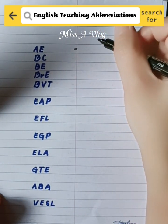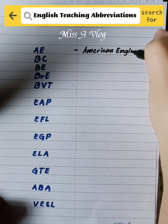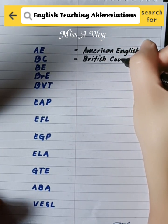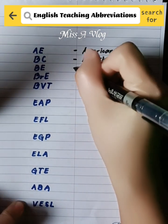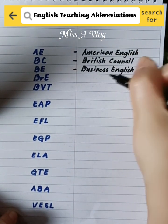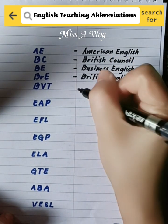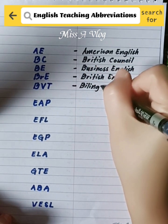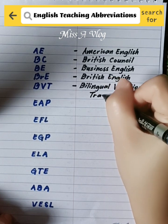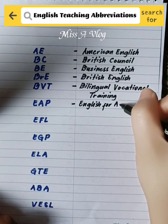English Teaching Abbreviations. American English. British Council. Business English. Bilingual Vocational Training. English for Academic Purposes.